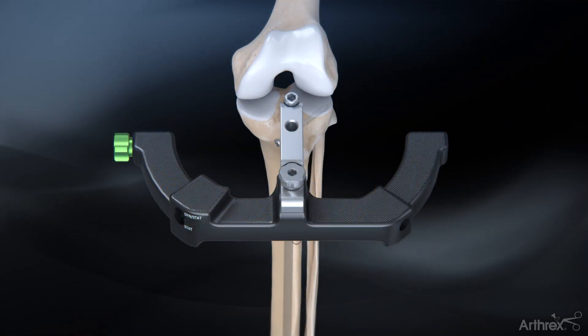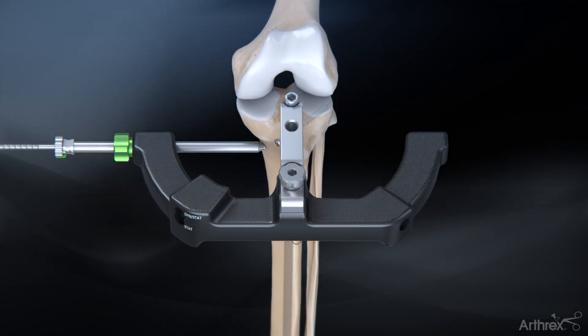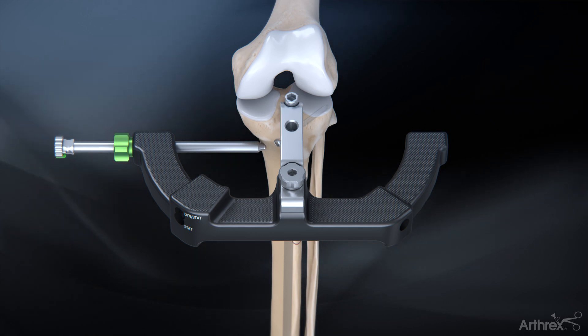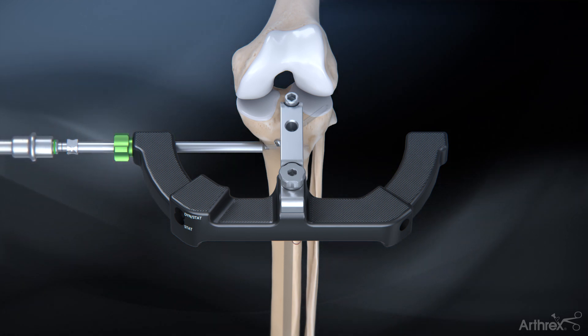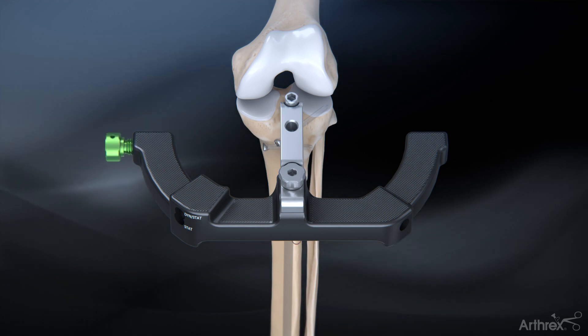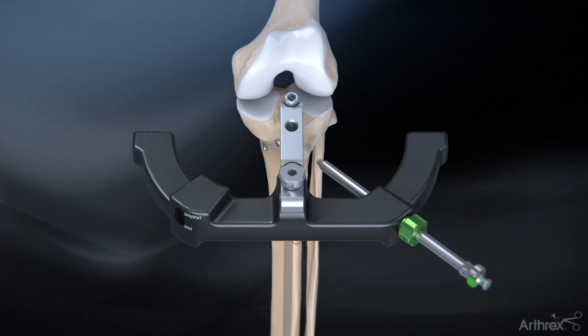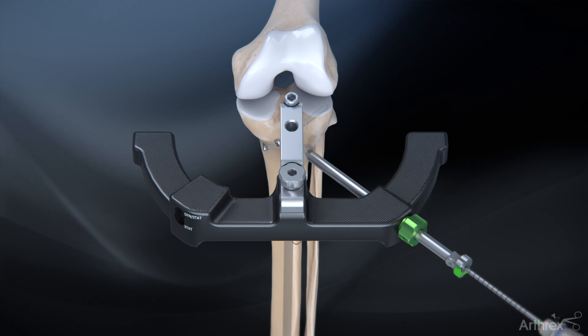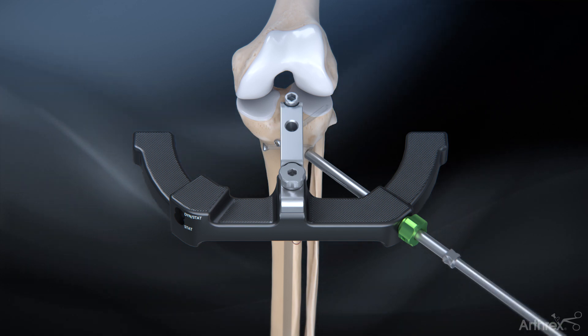Insert the remaining proximal screws by threading in the collet nut and drill guide sleeve, drilling to the desired depth and inserting the appropriately sized captured screw. Complete the remaining proximal screw insertion to fully lock the nail in place and maintain compression.